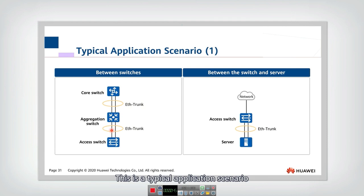This is a typical application scenario. Another application scenario is that the Ether trunk can be used between the access switch and the server. If there are multiple servers or one server and we want to provide more bandwidth between the switch and the server, then we will use multiple links and we can aggregate them together.